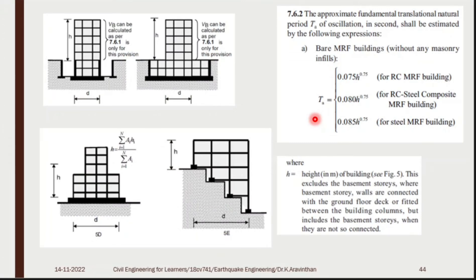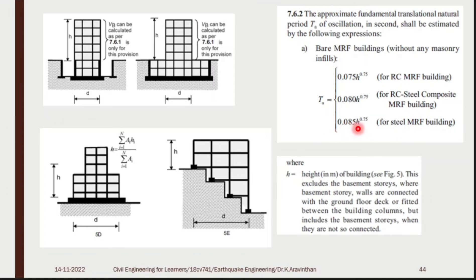As per clause 7.6.2, for RC MRF — Moment Resisting Frame buildings — and for RC-steel composite bridges where steel girders support an RC slab, you use the time period TA. In dynamic analysis, capital T denotes time period. TA equals 0.08 × H^0.75 for RC construction, or 0.085 × H^0.75 for steel-only construction, where H is the height of the building.